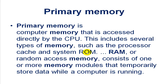The full form of RAM is Random Access Memory, and the full form of ROM is Read Only Memory. RAM consists of one or more memory modules that temporarily store data while a computer is running.